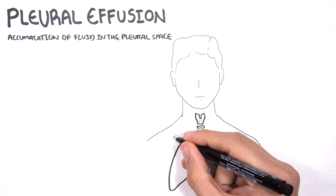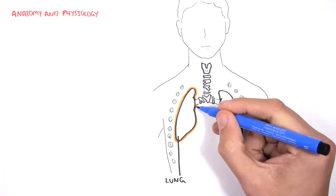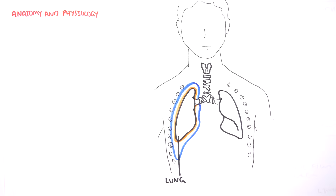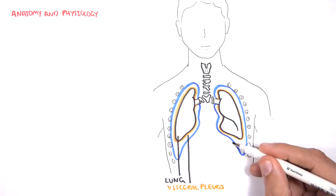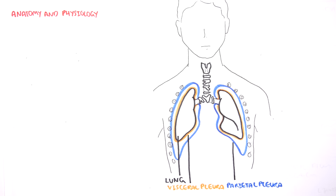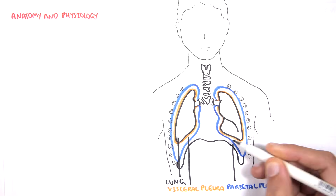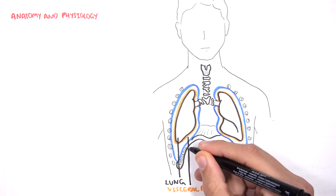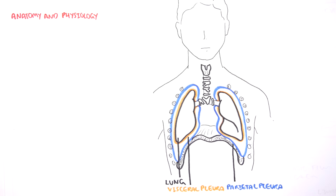Let's recap some basic anatomy and physiology. Here are the lungs. Surrounding the lungs is the visceral pleura, which continues on and becomes the parietal pleura, which attaches to the thoracic wall. The visceral and parietal pleura is a continuous serous sheet. The space that separates them is the pleural space, which contains pleural fluid.